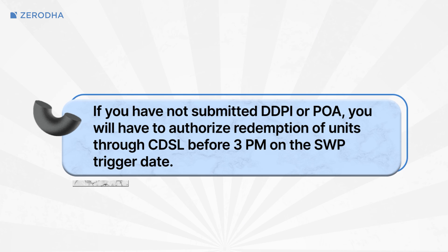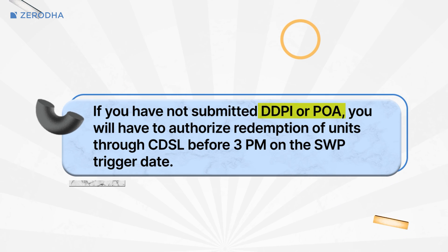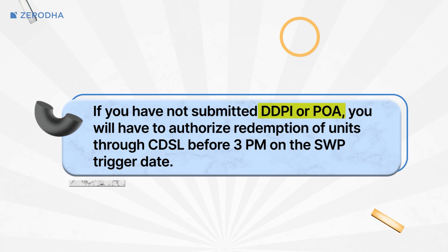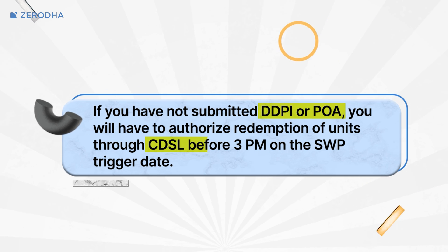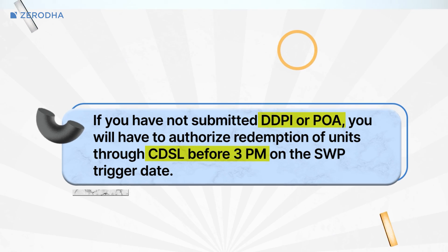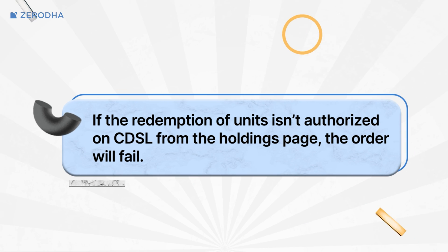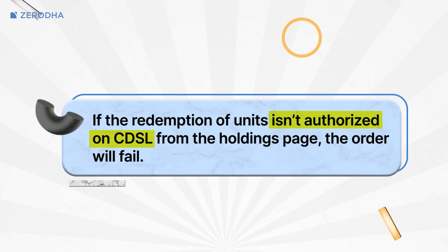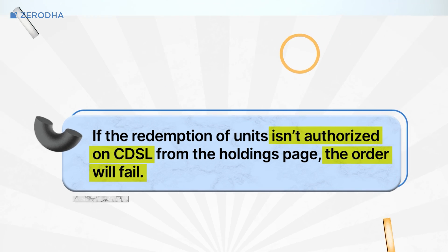If you have not submitted DDPI or POA, you will have to authorize the redemption of units through CDSL before 3 pm on the SWP trigger date. You will get a notification on the Coin app and an email on the registered email ID. If the redemption of units isn't authorized on CDSL from the holdings page, the order will fail.